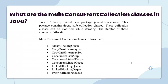What is the main concurrent collection class in Java? In Java 1.5, a new package java.util.concurrent was introduced. This package contains thread-safe collection classes that can be modified while iterating. The main concurrent collections include ArrayBlockingQueue and CopyOnWriteArrayList.